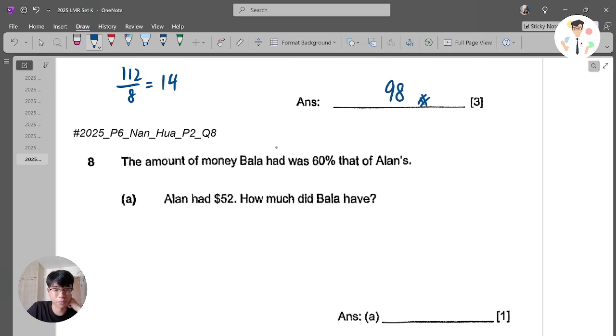Let's look at our next question, which is from Nanyang Paper 2, question 8. Not a difficult question for part A. The amount of money Bala had was 60% that of Alien's. I will strongly recommend you just to change this into fraction. 60 over 100 means 3 out of 5. This means that Bala have 3 units. Alien actually have 5 units. And they tell us that Alien have $52.